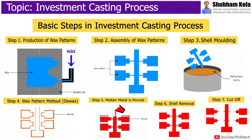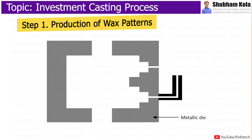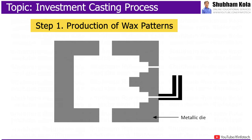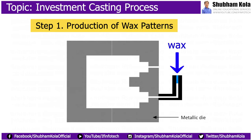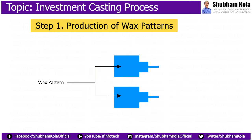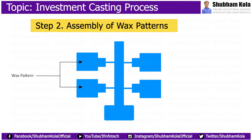This casting process starts with the production of wax patterns. Metallic dies are used to prepare wax patterns. An assembly of a large number of wax patterns are made and attached to a wax sprue centrally.